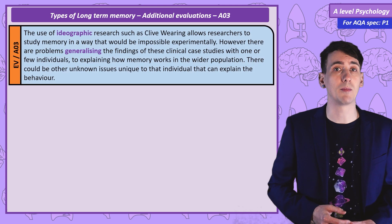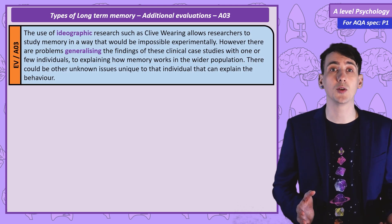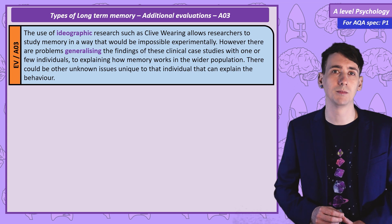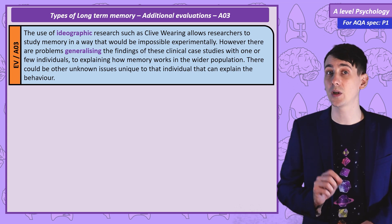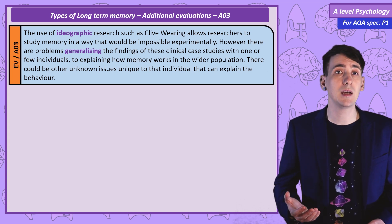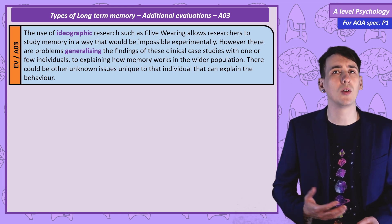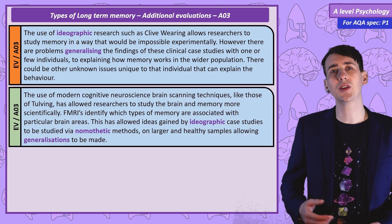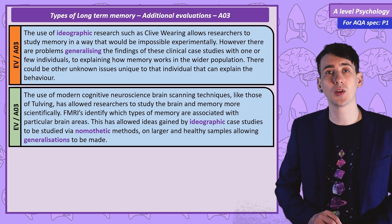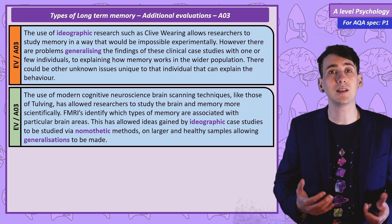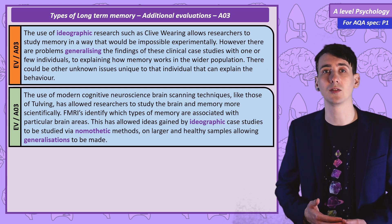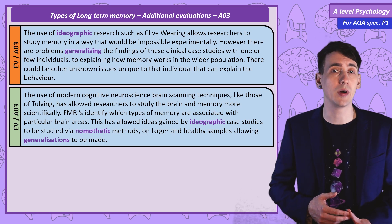Much of the research on types of long-term memory uses clinical case studies — this is an example of idiographic research. These studies allow an in-depth investigation of memory in a way that would be simply impossible in an experimental setup. However, because these are individuals, and unusual individuals at that, we may not be able to generalise findings on the types of long-term memory to other, healthy people. It may be that their brain damage is more extensive than we can see. However, researchers like Tulving use modern cognitive neuroscience studies using PET and fMRI scanners to investigate how different types of long-term memory are linked to areas of brain activation. These nomothetic methods using healthy samples also show distinctions between the types of long-term memory, backing up observations from case studies, which increases our confidence that types of long-term memory truly are separate.